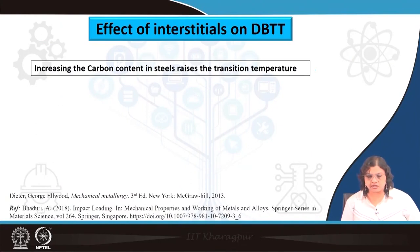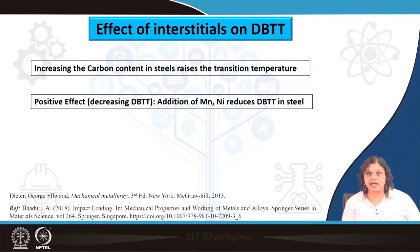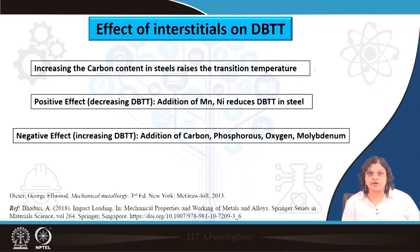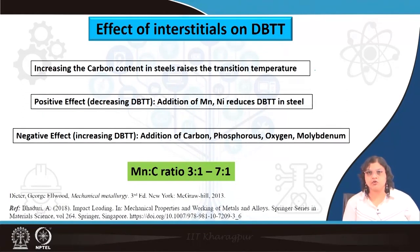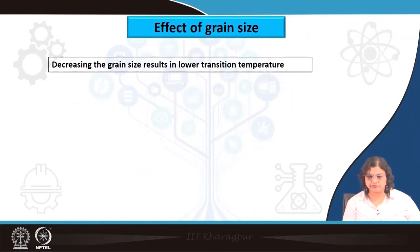In summary for interstitial atoms: increasing carbon content in steel raises the transition temperature. Elements like manganese and nickel have positive effects reducing DBTT, whereas carbon, phosphorus, oxygen, and molybdenum have negative effects increasing DBTT. The manganese to carbon ratio needs to be controlled, varied over a range of 3:1 to 7:1, so that the required DBTT can be achieved.